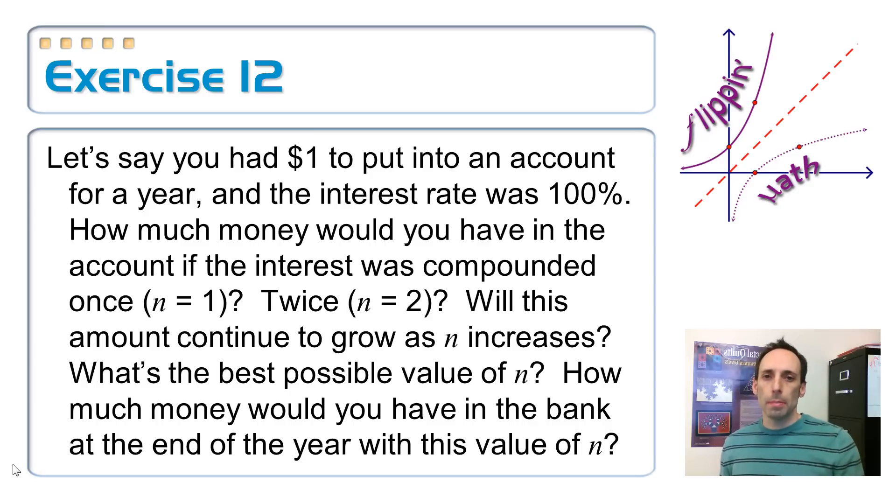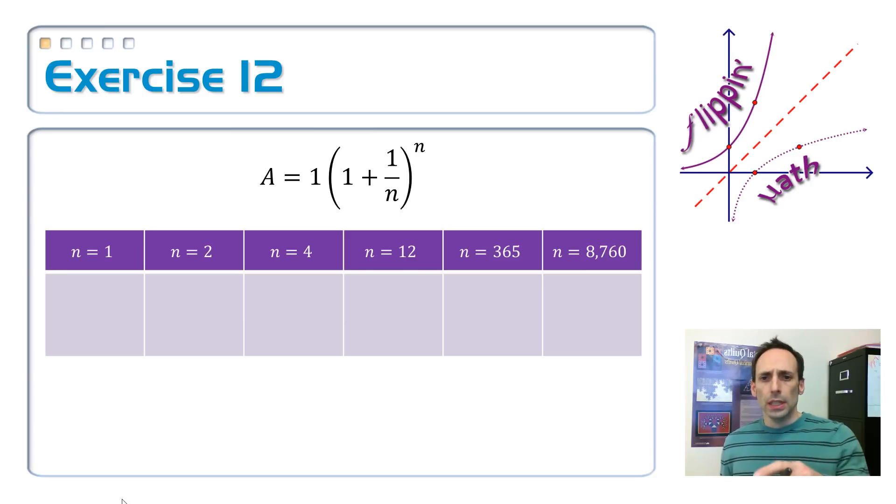So how much money is going to be in that bank account after that first year? So basically we're using that same compound interest equation. My initial amount right there is one dollar. And in parentheses I got one plus one over n, the one is because it's 100%, raised to the n power. And so we're just going to fill out this little table and see what's going on.